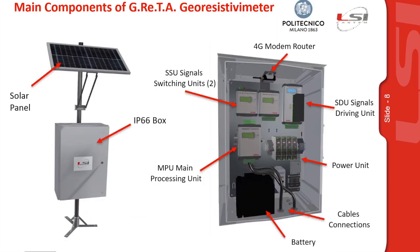In this slide, the main components of the system are explained. The device is inside one box — in this picture with a solar panel, though the system can also be connected to the power grid. Inside the box, there are different components: the signal switching unit, the signal driving unit, the main processing unit, the power unit and battery, and the communication part with a 4G modem or router. The picture also shows the connections to the cables that will be connected to the electrodes.